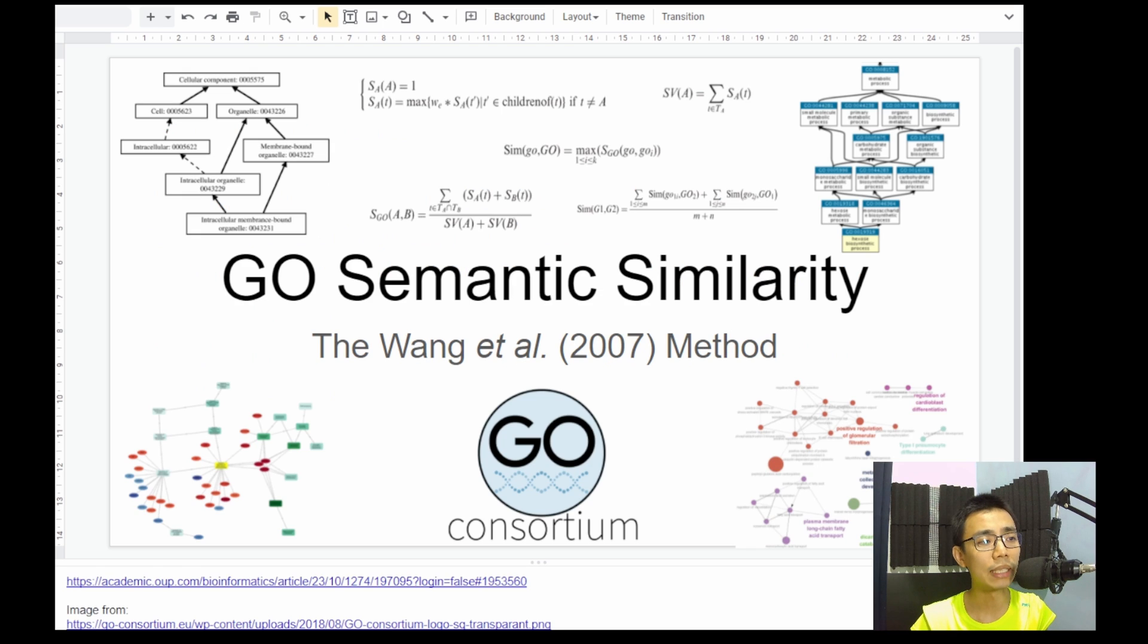So that's basically the whole concept of GO semantic similarity explained in a way with no mathematics and symbols involved. I hope you enjoyed the video, and maybe subscribe for the next one before it comes up. That's all. Bye!